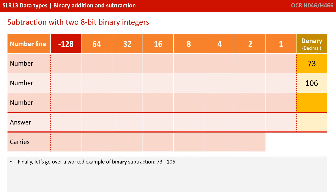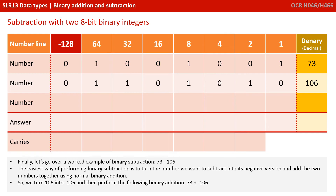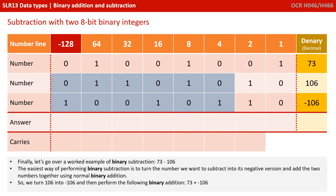Finally, let's go over a worked example of binary subtraction — we're going to do 73 minus 106. The easiest way is to turn the number we want to subtract into its negative version and then add the two numbers together using normal binary addition. So we're going to turn 106 into minus 106 and then perform 73 plus minus 106. We follow the rules for flipping a number from positive to negative: starting from the least significant bit, we copy every digit up to and including the first 1 — so we copy the 0 and the 1.